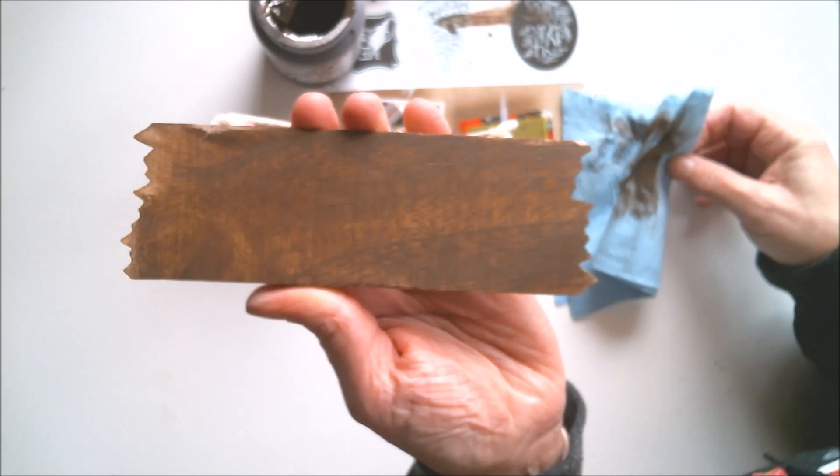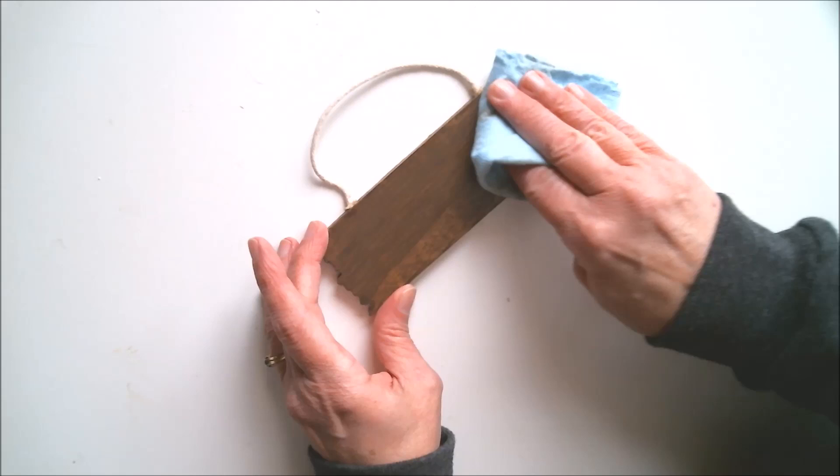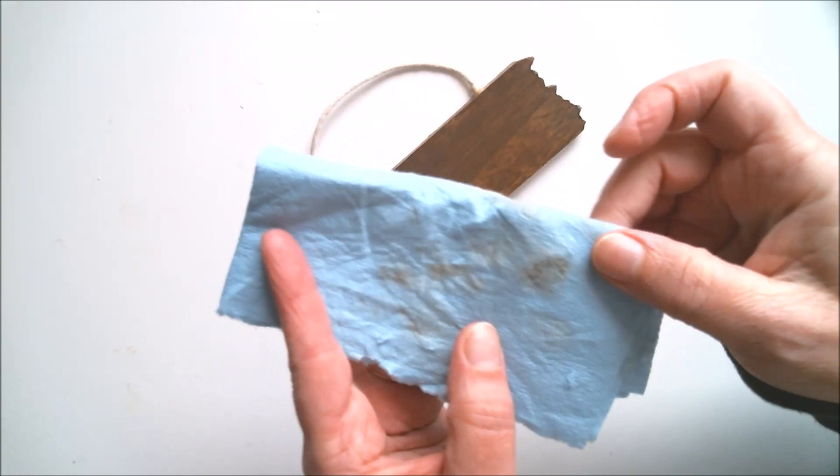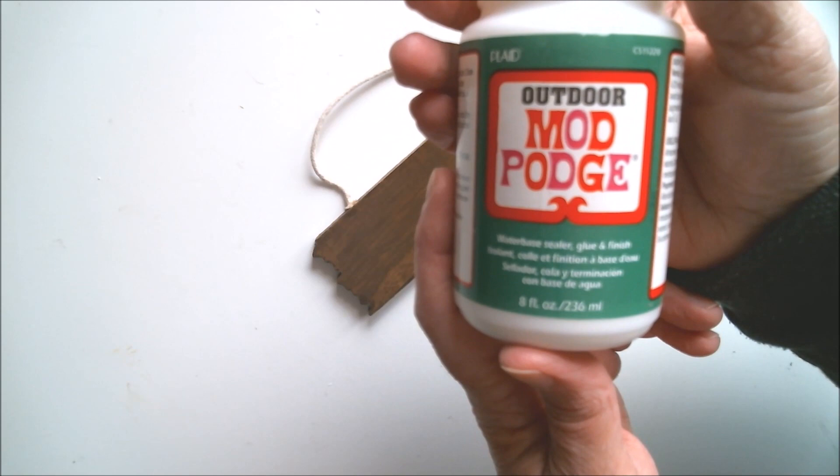Once the wax stain is dry I went over it with a lint-free cloth to kind of buff it out and remove any excess. Then because this is going to be outside I gave it a few coats of outdoor mod podge but if you're not going to have yours outside you don't have to worry about this.